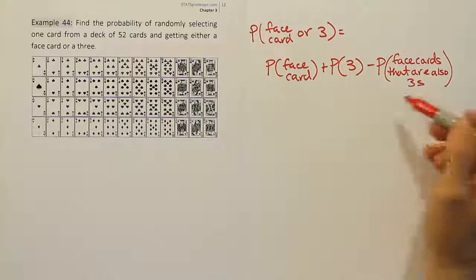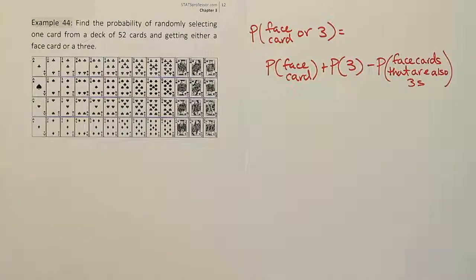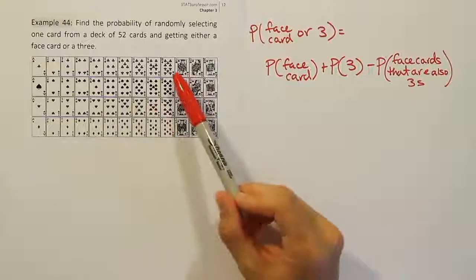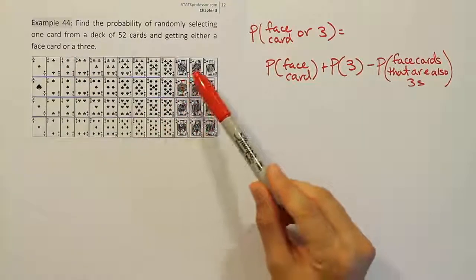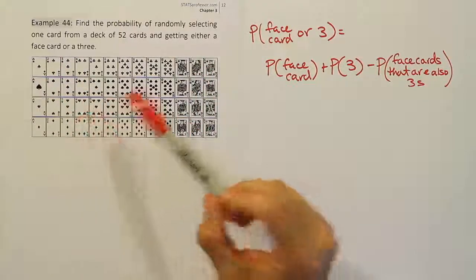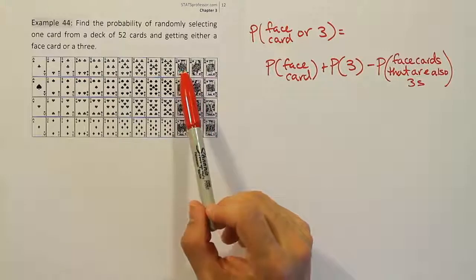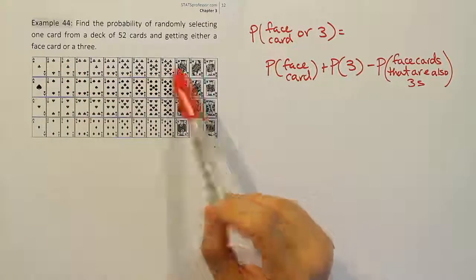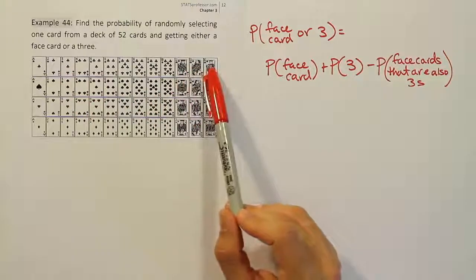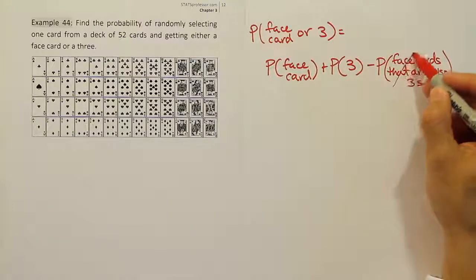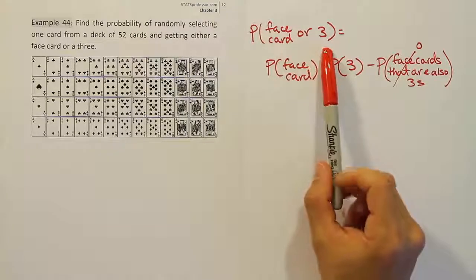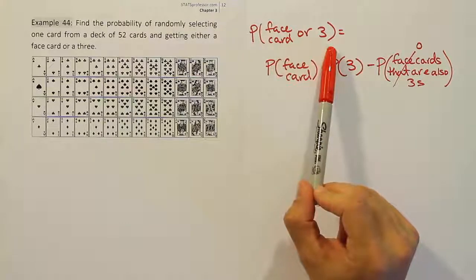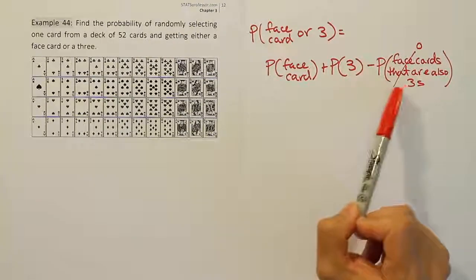The question we have to ask is: does this category exist? Are there any face cards that are also threes? When you look on the list here, face cards and threes are clearly separated. They are disjoint sets — there's no overlap. You can't find a jack of threes, for example. It's either a three or a jack, a three or a queen, a three or a king. There are no face cards that are also threes, so this set is empty and the probability of getting it is zero. This is a mutually exclusive addition rule case, which actually makes our lives easier.